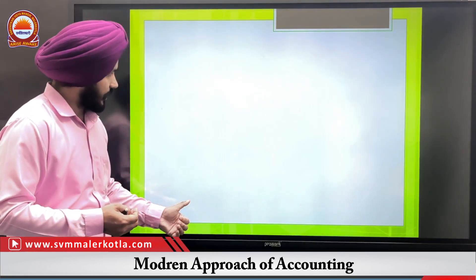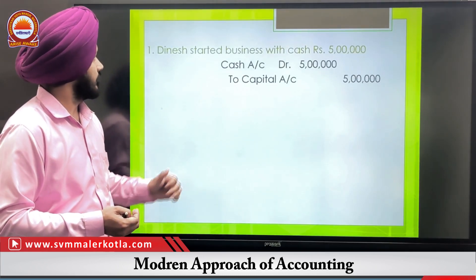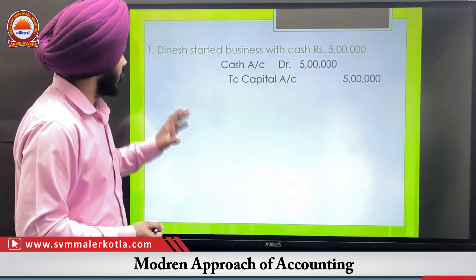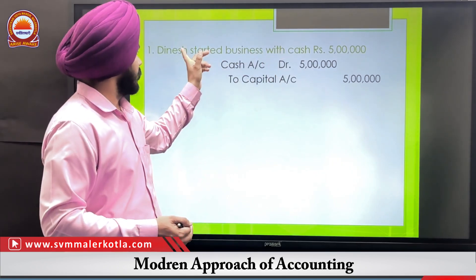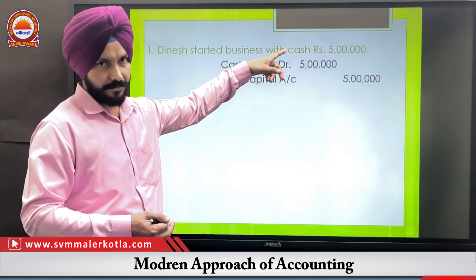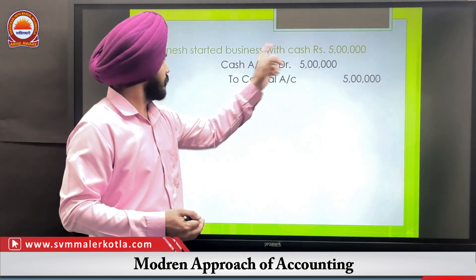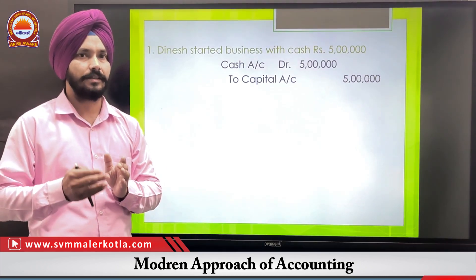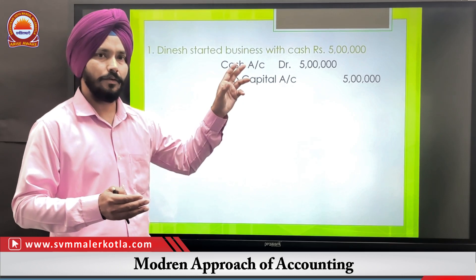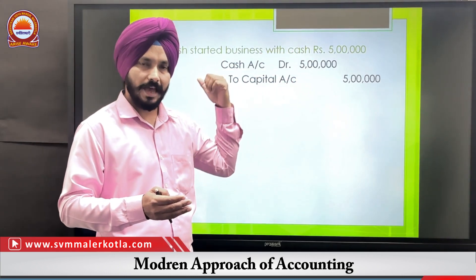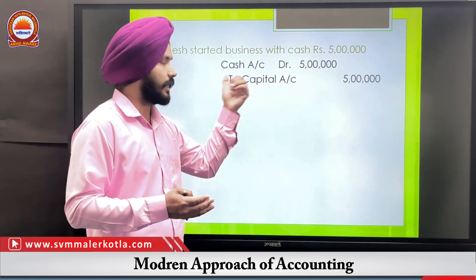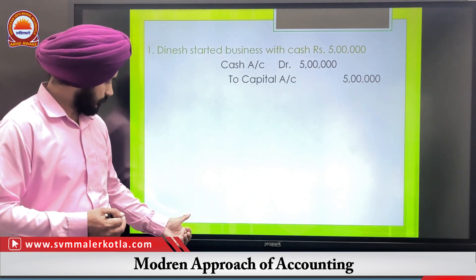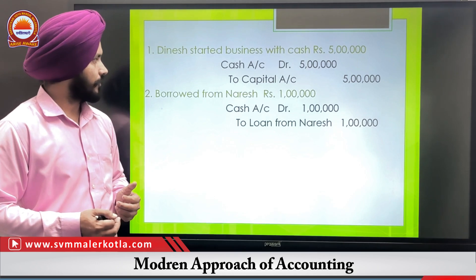Now we will discuss some examples. First example: Dinesh started business with cash rupees five lakh. The two aspects are capital and cash. Capital is increasing so we credit it; cash is an asset and asset increases so we debit it. Therefore, the journal entry is: Cash Account Debit to Capital Account.